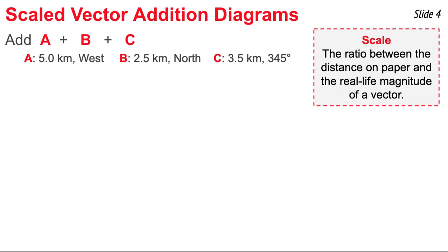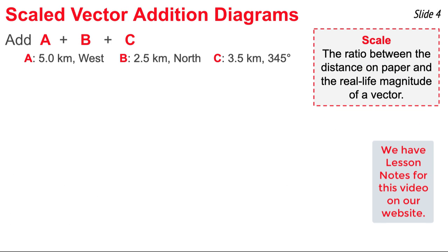In this video, we'll learn how to use a scaled vector addition diagram to graphically add two or more vectors. For example, we want to add vectors A plus B plus C, with their magnitude and direction given. Our first step is to choose a scale — a ratio of distance on paper to the real-life magnitude of a vector. Here, one centimeter on the sheet of paper equals 0.5 kilometers of the vector.